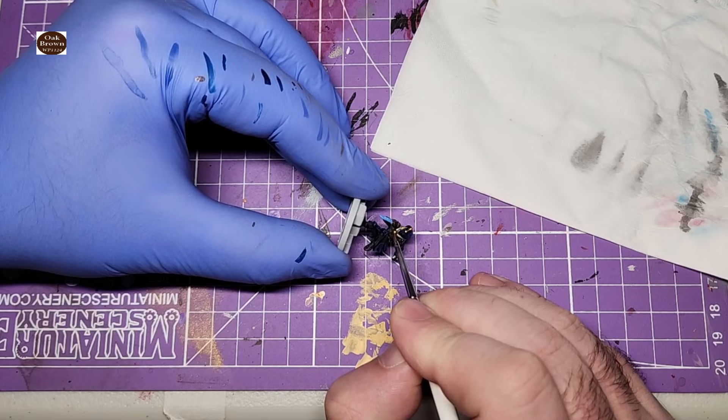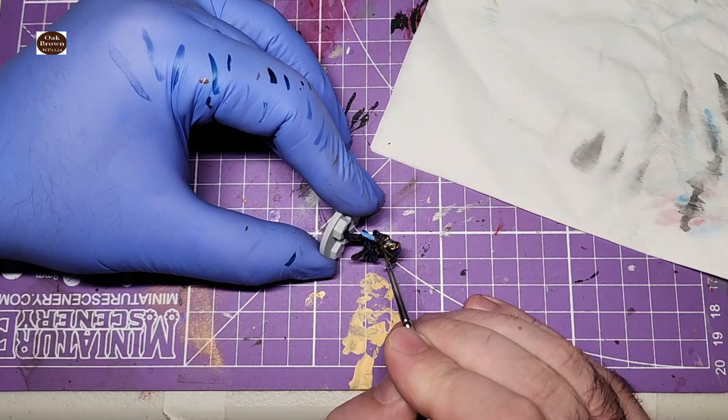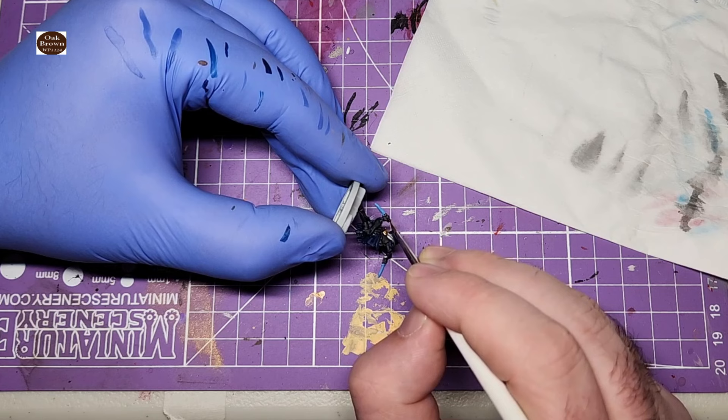For the handles I used Oak Brown. Honestly I probably should have just used a color that was already on my palette for this detail rather than grabbing a new one. Small things like this are one of the reasons painting models often takes me so long.